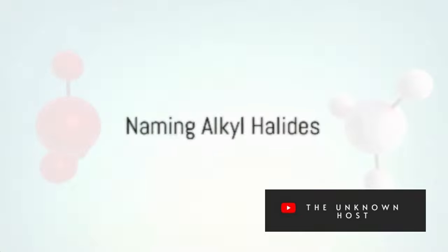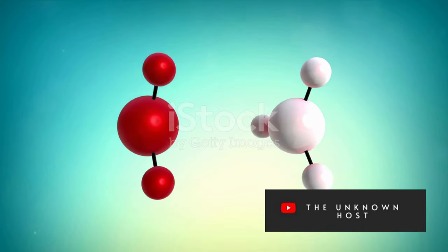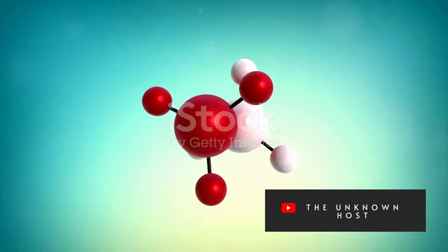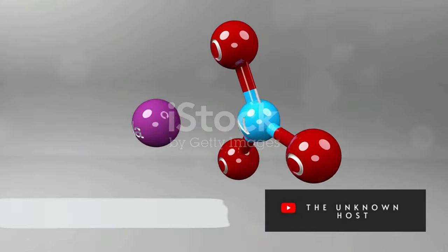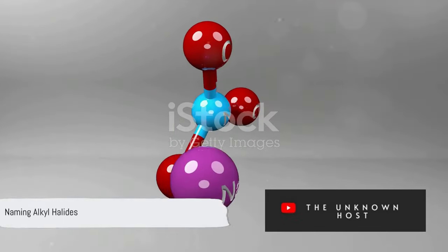Today we'll kick things off by discussing alkyl halides, which are compounds containing a halogen (F, Cl, Br, I) attached to a carbon atom. Here's how to name them. Let's practice with chloroethane, which has a two carbon chain and a chlorine atom. What's the IUPAC name for chloroethane?